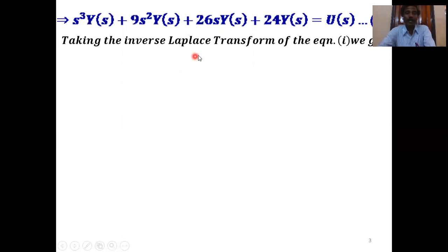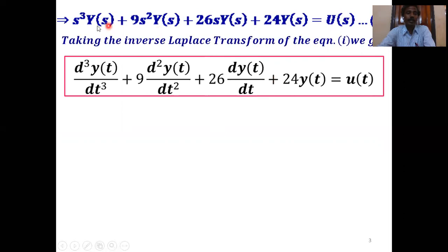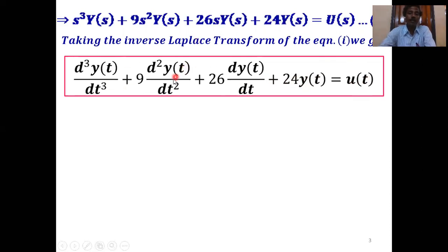Taking the inverse Laplace transform of equation 1, we get: d³y(t)/dt³ + 9·d²y(t)/dt² + 26·dy(t)/dt + 24·y(t) = u(t). This is the third order differential equation.